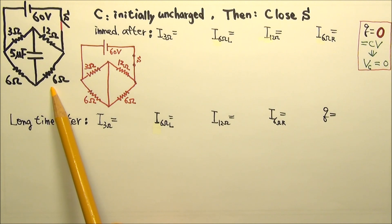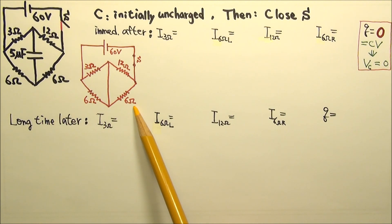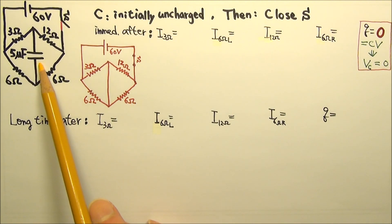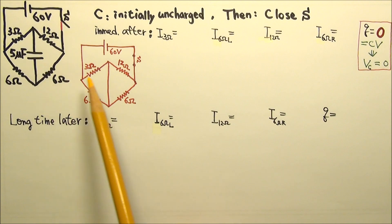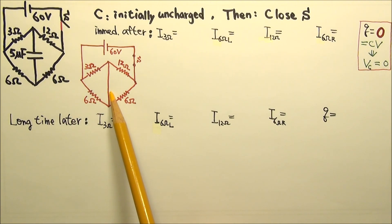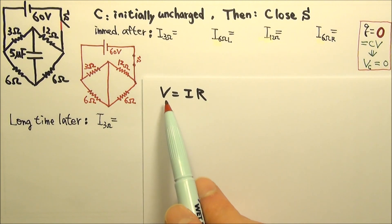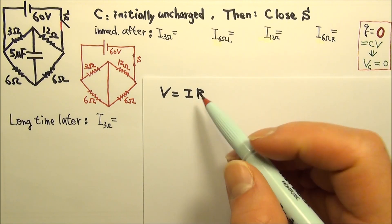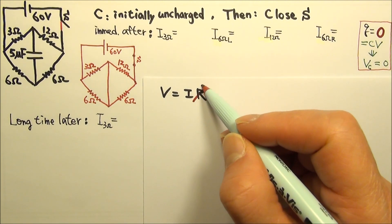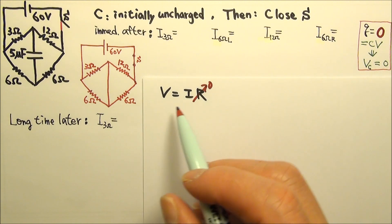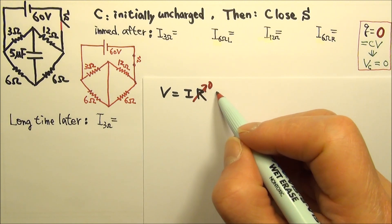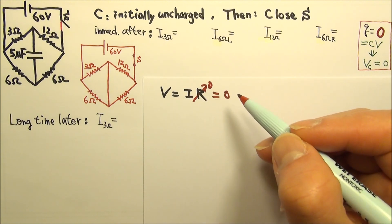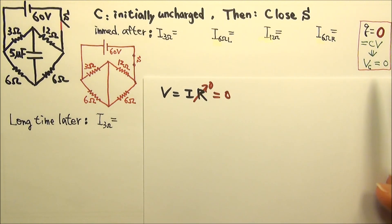This means we can pretend that the capacitor is like an ideal wire just at this particular moment, and the circuit is like this one. We can pretend the capacitor is like a wire because a wire allows charging current to flow. And since V equals IR, with the ideal wire's resistance being zero, the potential difference across the wire is also zero — just like an uncharged capacitor.